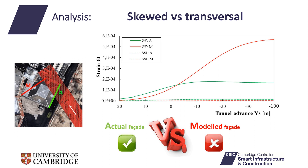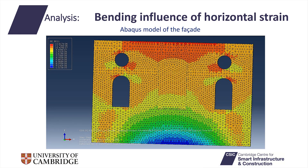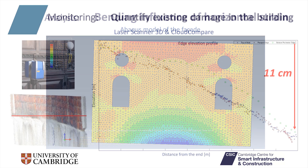Soil-structure interactions are also affected by neglecting the skew. Analyses typically focus on vertical deformation, but this facade of the church implemented in the software Abaqus suggests that the horizontal strain is a critical governing factor in this case.